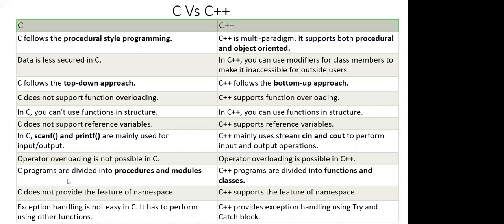C programs are divided into procedures and modules, but C++ programs are divided into functions and classes. C does not support namespace, but C++ does. Exception handling is not easy in C and has to be performed using other functions, but C++ provides exception handling using try and catch blocks.